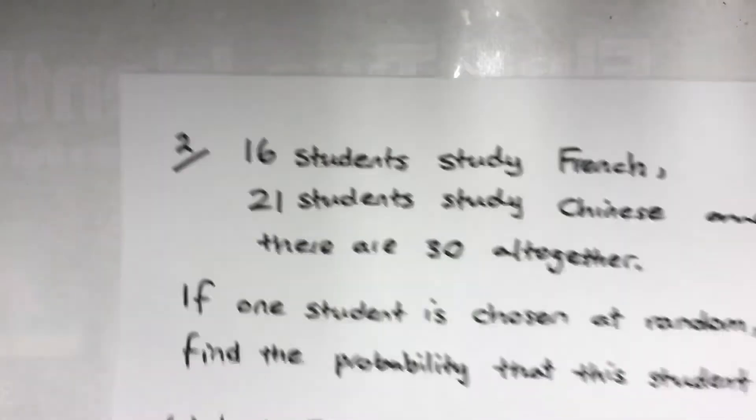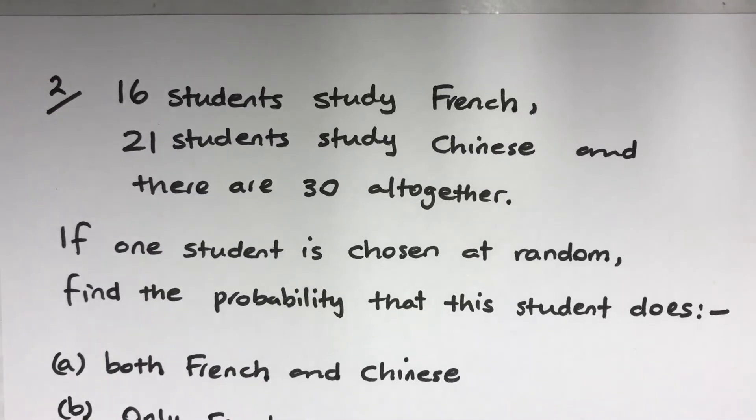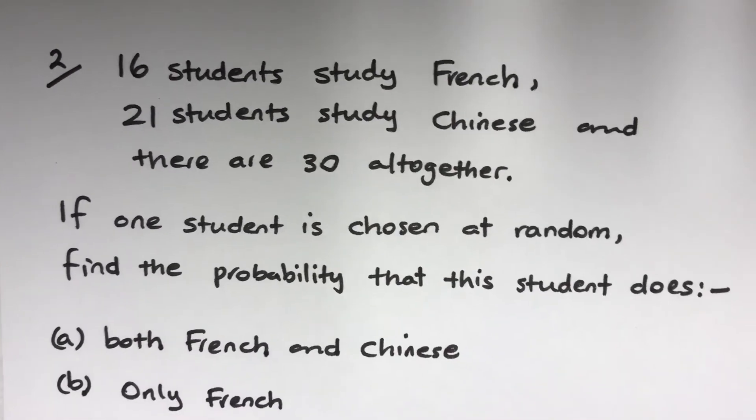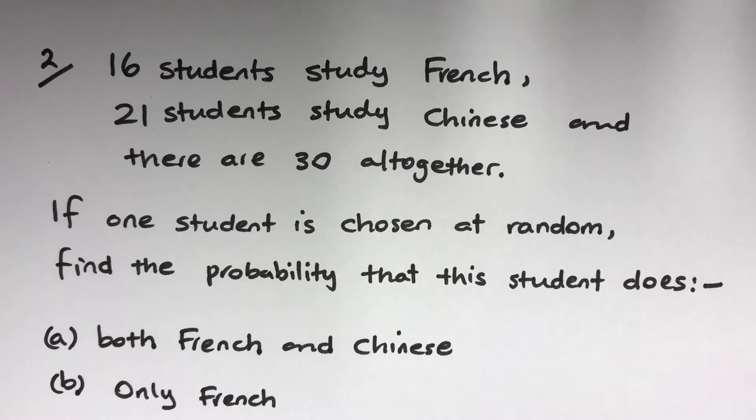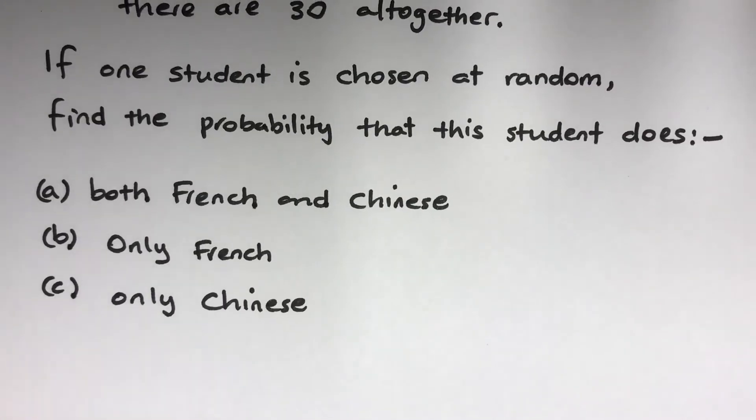Next question: 16 students study French, 21 students study Chinese, and there are 30 of them altogether. If one student is chosen at random, find the probability that this student does: both French and Chinese, only French, or only Chinese. Before we jump into all these exciting questions...